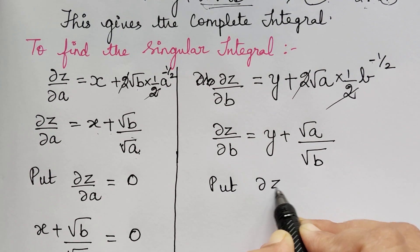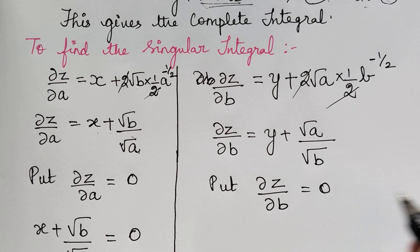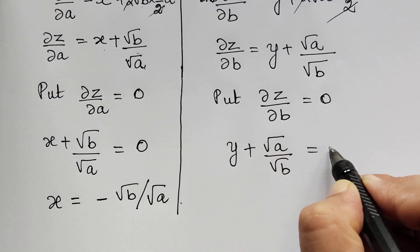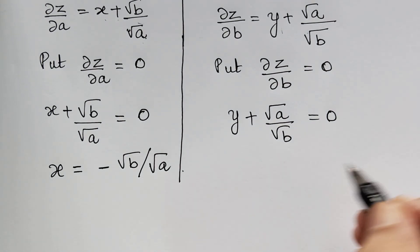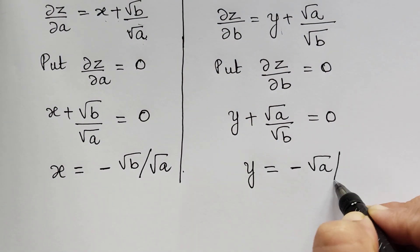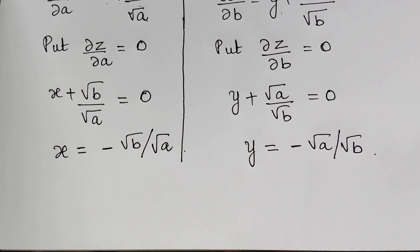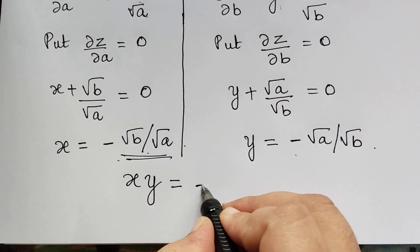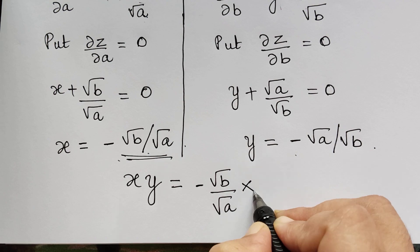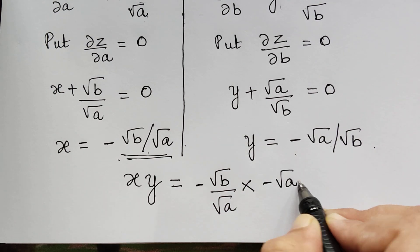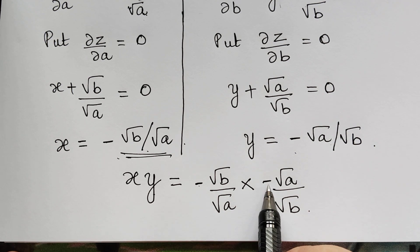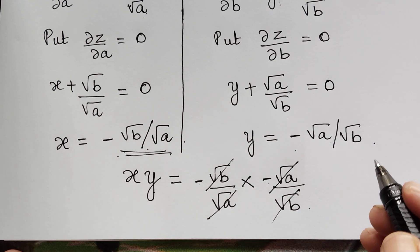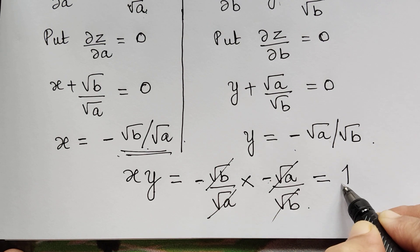Setting ∂z/∂b = 0 gives y + √a/√b = 0, so y = −√a / √b. Multiplying x and y: x · y = (−√b/√a)(−√a/√b). The negatives give a positive, and the radicals cancel, so xy = 1.